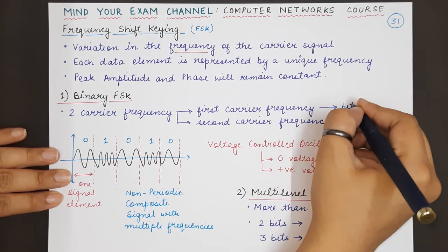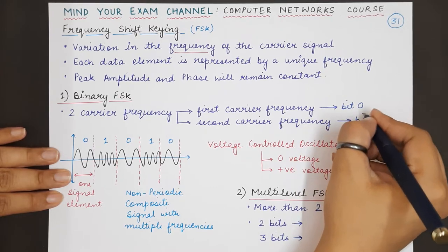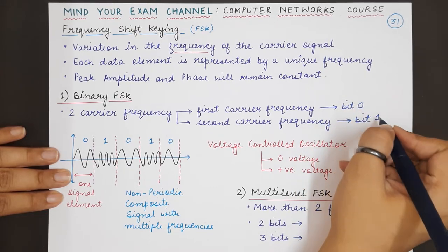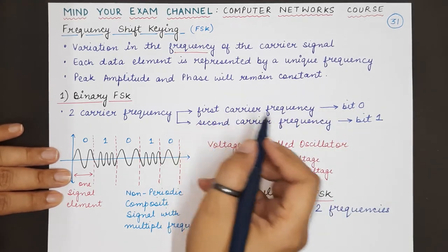The first carrier frequency can represent bit 0 and the second carrier frequency will represent bit 1. For each unique bit, each individual bit, we will have a carrier frequency.